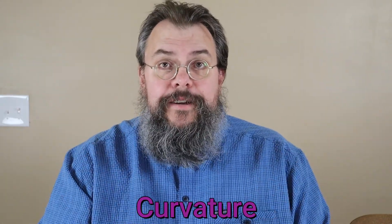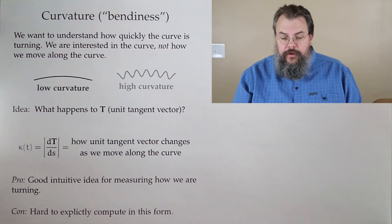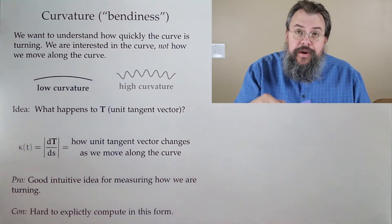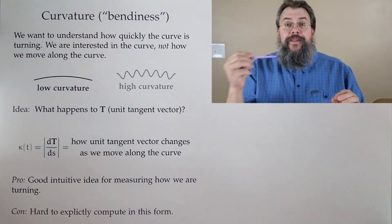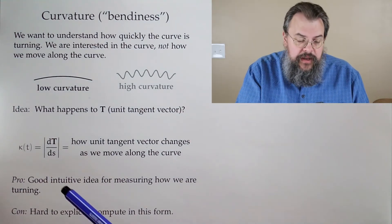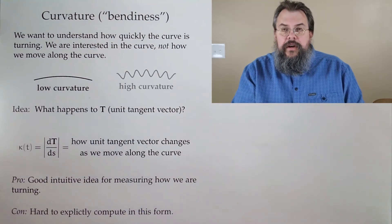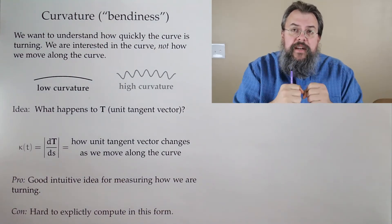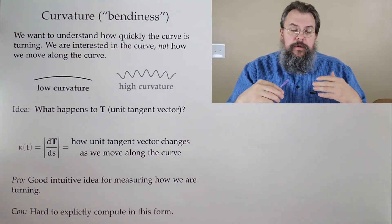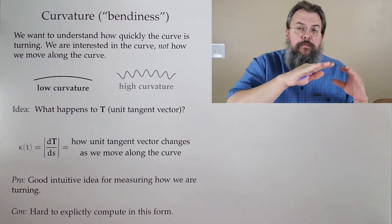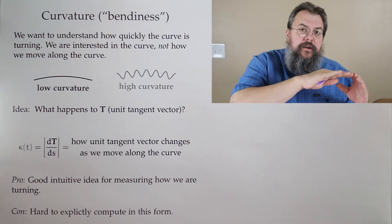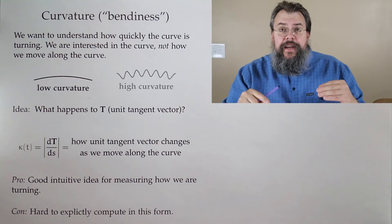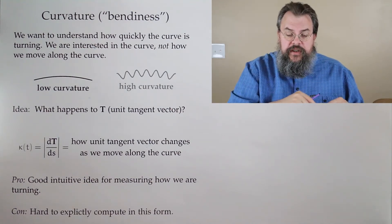To emphasize, we're really looking at the curve itself, not the way that we travel along the curve. Curvature is a measurement of how much we're twisting, how much we're bending. Something with low curvature barely has any bend to it. Something with high curvature is rapidly changing directions.